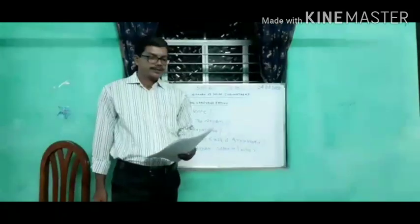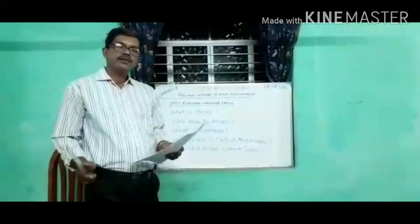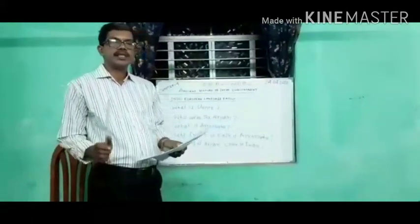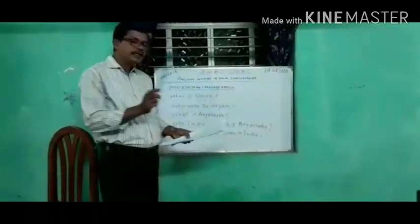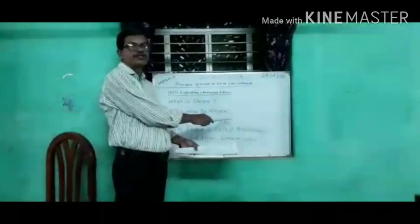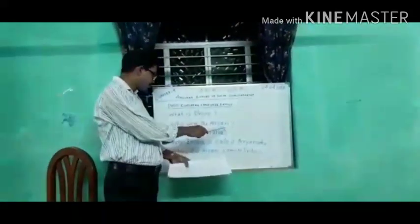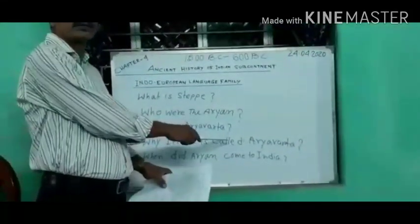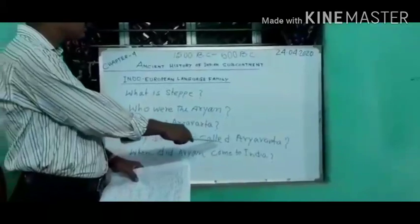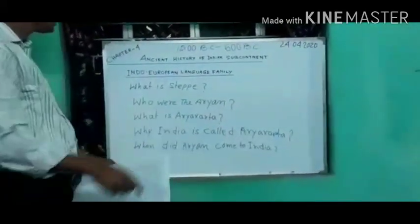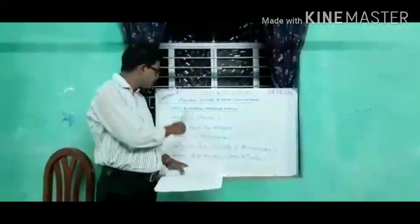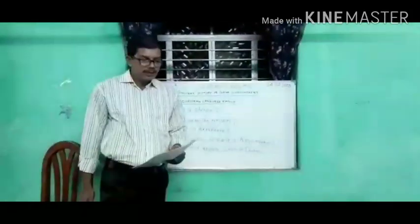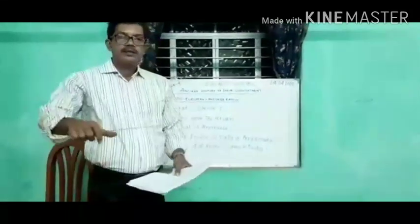Now we shall discuss some important words. What is STEPPE? Who are the Aryans? What is Aryavarta? Why is India called Aryavarta? When did Aryans come to India? These are the most important five questions in the chapter. I will discuss each of these questions.